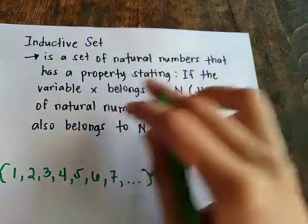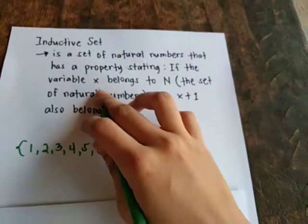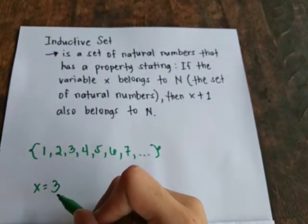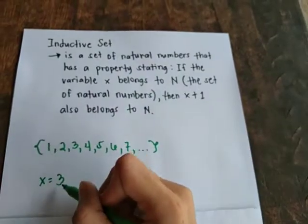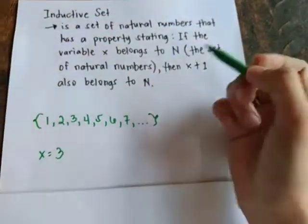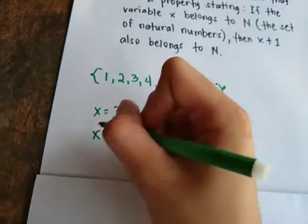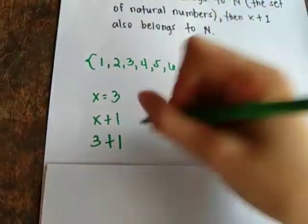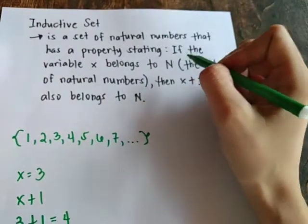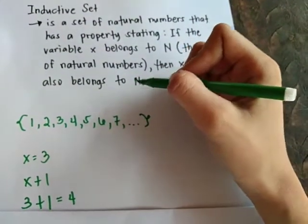It is stated that if the variable x belongs to the set of natural numbers, then x plus 1 also belongs to the set of natural numbers. For example, let our variable x be 3. We know that 3 is a natural number, so 3 belongs to the set of natural numbers. Then x plus 1, which is 3 plus 1 equals 4, also belongs to the set of natural numbers. And we know that 4 is a natural number. Therefore, it is true that if x belongs to the set of natural numbers, then x plus 1 also belongs to the set of natural numbers.